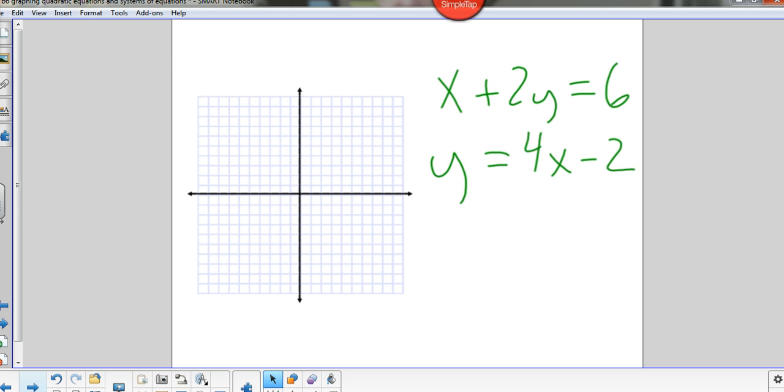Okay, so here's an example. If I draw the graphs of these lines and see where they meet, for this top line, it's in standard form. So I'll find the two intercepts. The x-intercept is 6 because if I put 0 in for y, x would equal 6. And then the y-intercept, if I put 0 in for x, the y-intercept is 3. So in green, let's see how well I can do this.